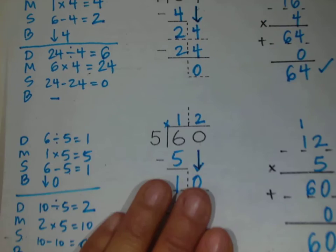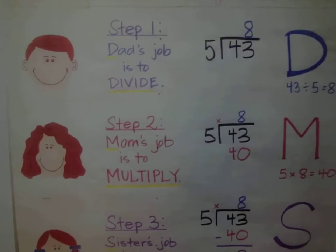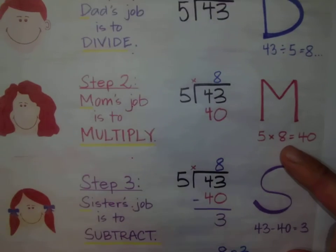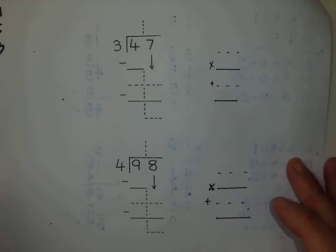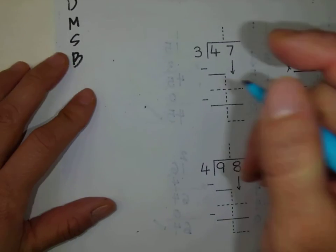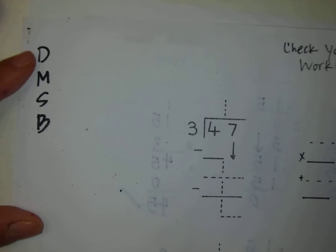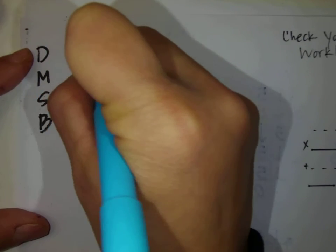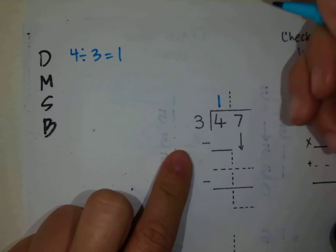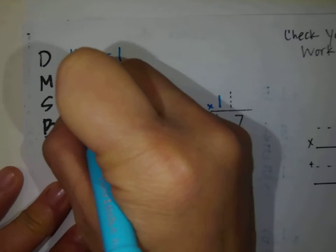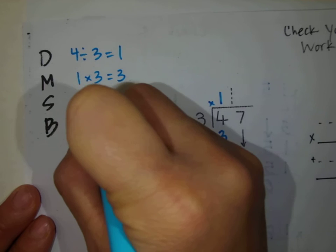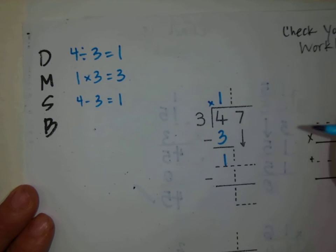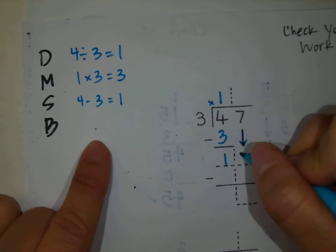I'm going to go ahead and do the back side now. Here's just a reminder to check the division poster for all of these steps. Let's start off: the first step is 4 divided by 3 equals 1. Second step, mommy multiply: 1 times 3 equals 3. Third step, sister subtract: 4 minus 3 equals 1. The next step is brother bring down — I'm going to bring down that 7.